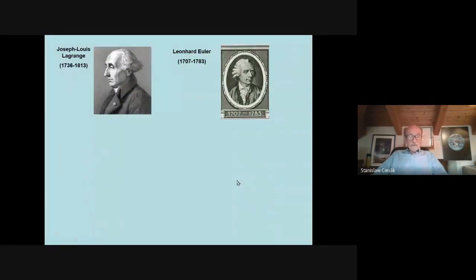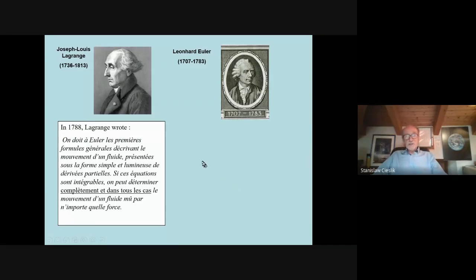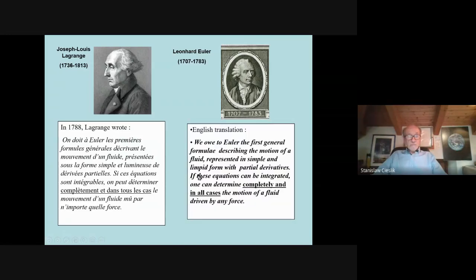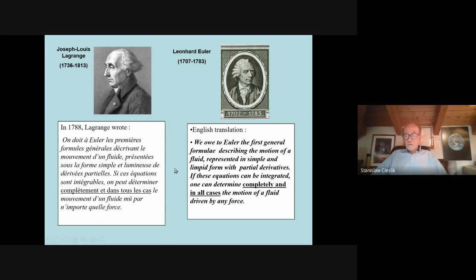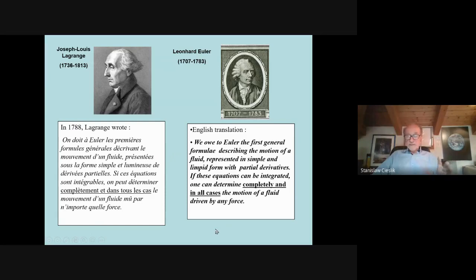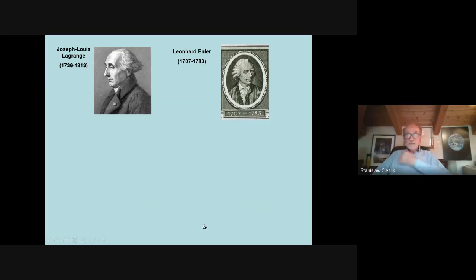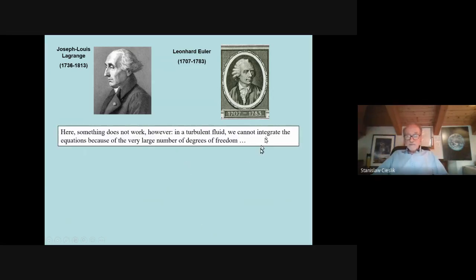A little bit of history: Joseph-Louis Lagrange — an Italian and French mathematician — and Euler. Lagrange wrote that we owe to Euler the first general formulae describing the motion of a fluid, in simple form with partial derivatives. If these equations can be integrated, we can completely determine the motion of a fluid driven by any force. This was the idealism of pure rational physics, which was deterministic. But the problem is that you have a very huge number of degrees of freedom, so you cannot integrate the Navier-Stokes equations.